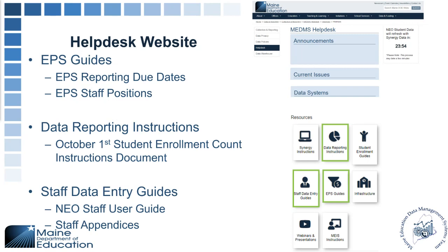For today's report on staff certification, there are many resources on multiple different tiles. One of them is the EPS guides, where you can find the EPS reporting due dates and the staff positions that qualify for EPS. You also have the data reporting instructions tile, which has the October 1st staff count directions. We also have the staff data entry guides — that's your NEO staff user guide, which includes staff appendices for adding staff, positions, and things like that.